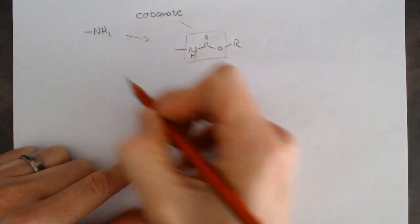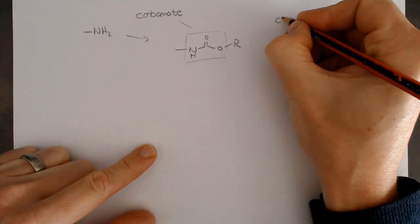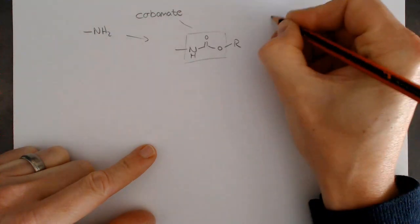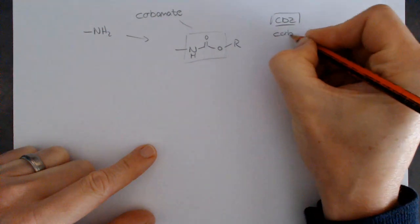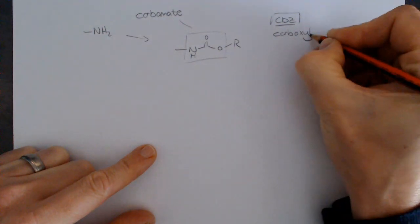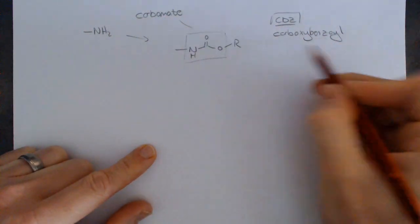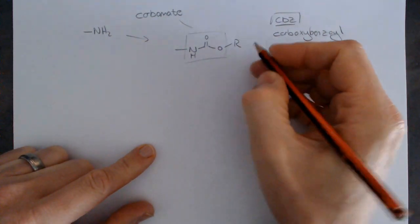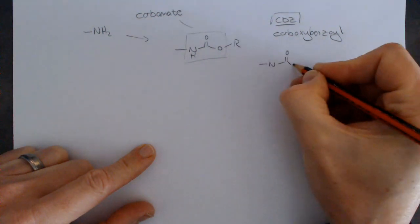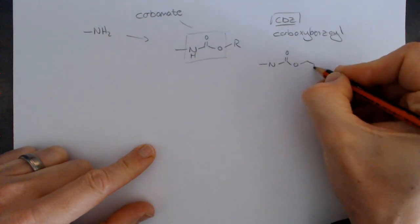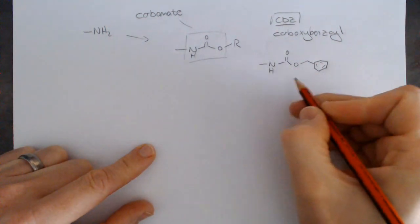These are very common protecting groups for an amine. The one I want to look at is known as CBZ, carbobenzyl. The R there is just a benzyl group. So it looks like this, O and the phenyl ring.